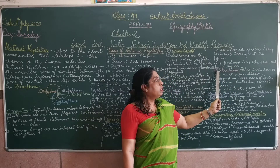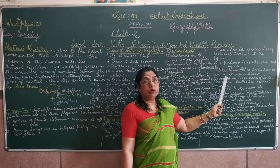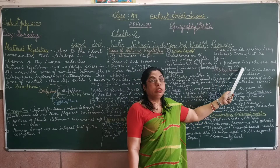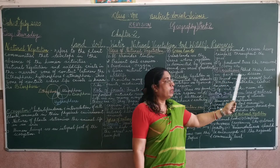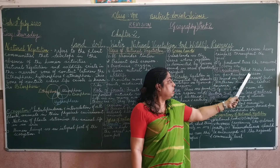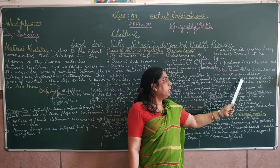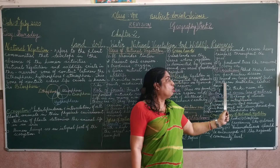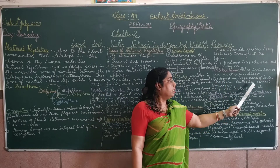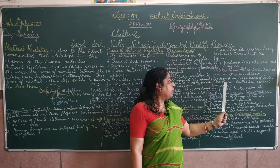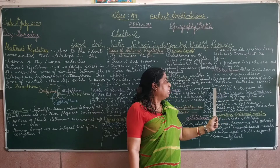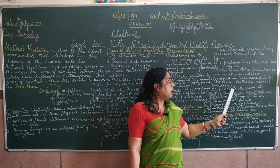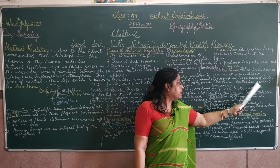Deciduous forests shed their leaves in a particular season. They are found in large areas of India, northern Australia, and Central America. Examples include sal, teak, neem, etc.